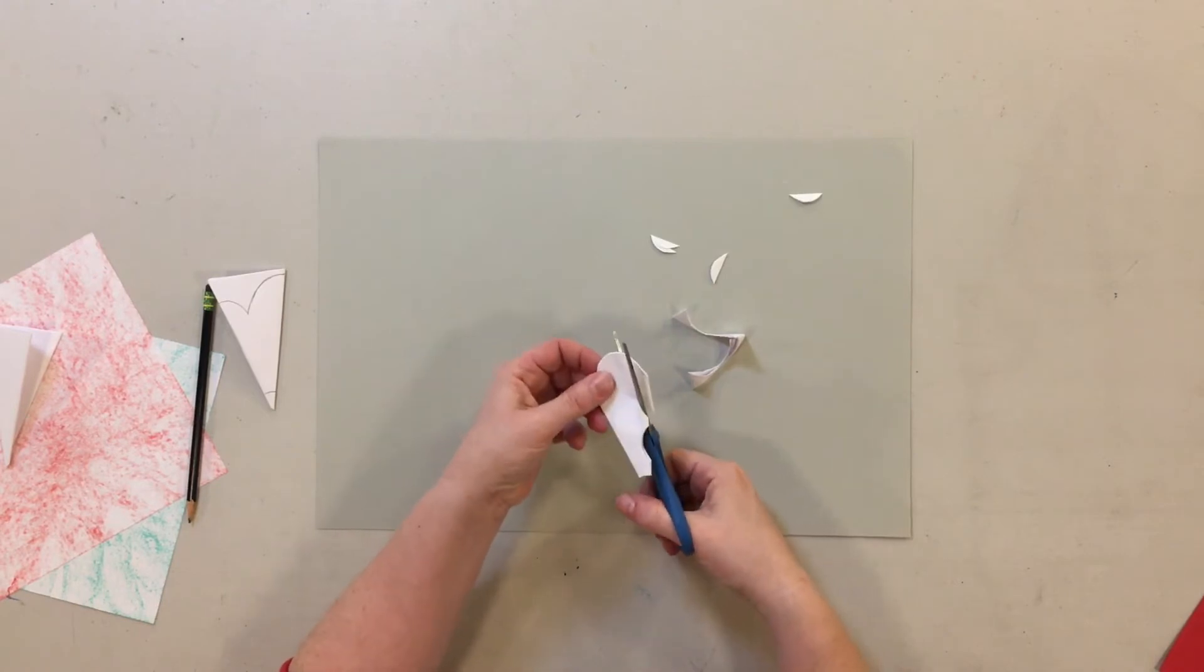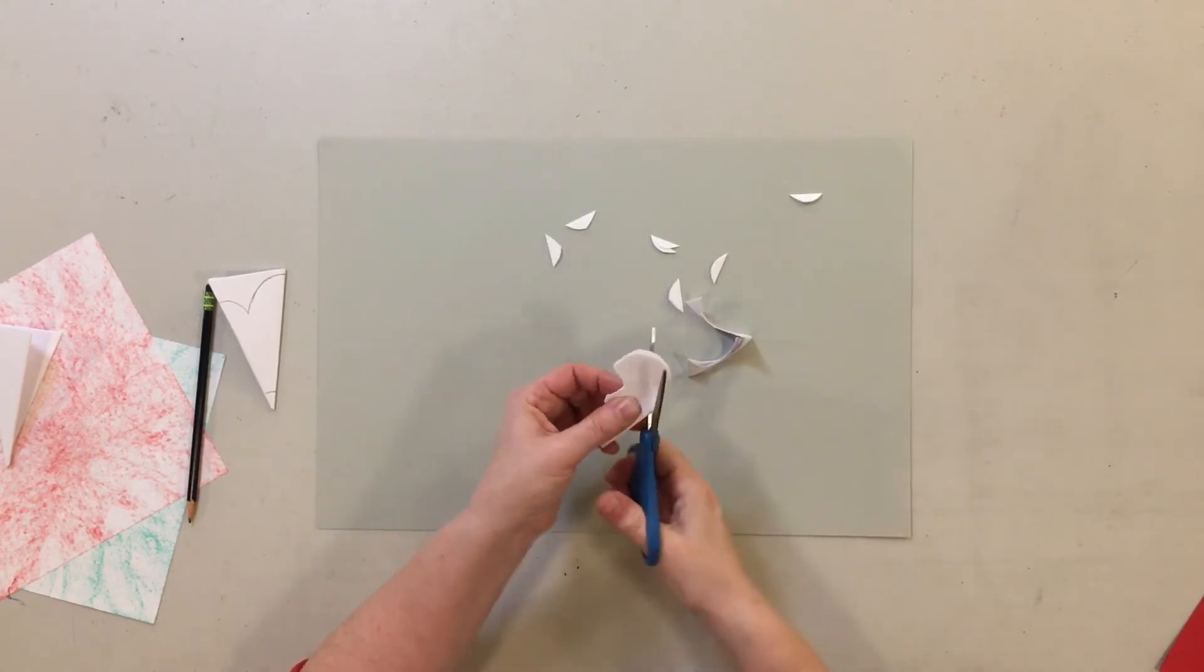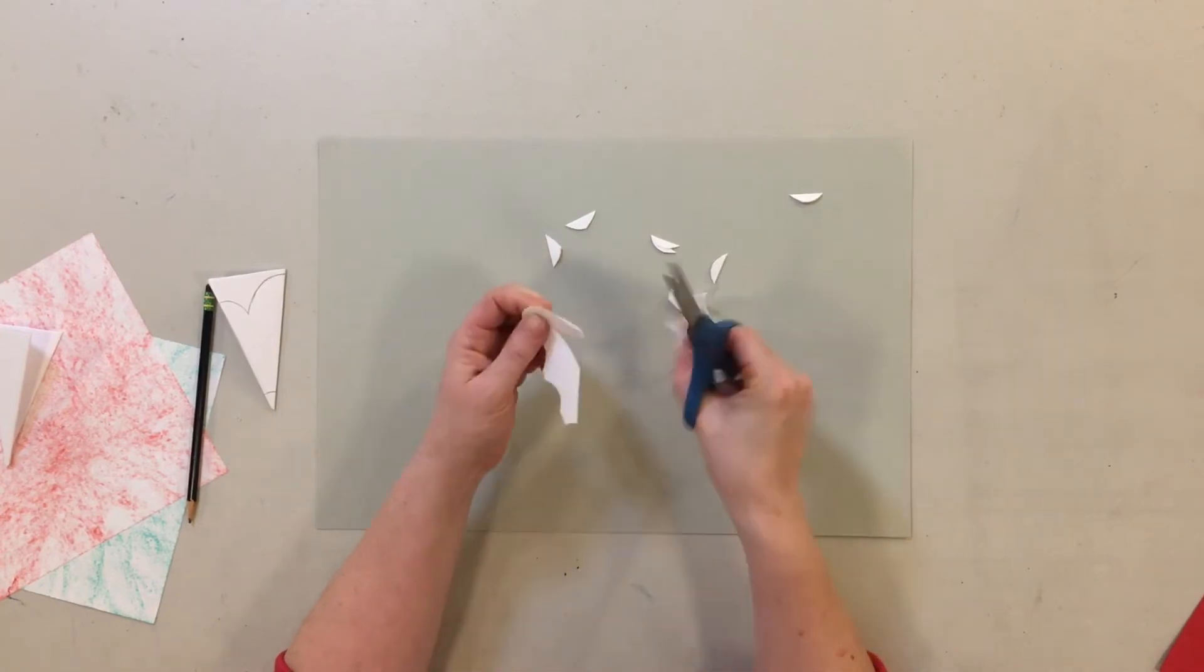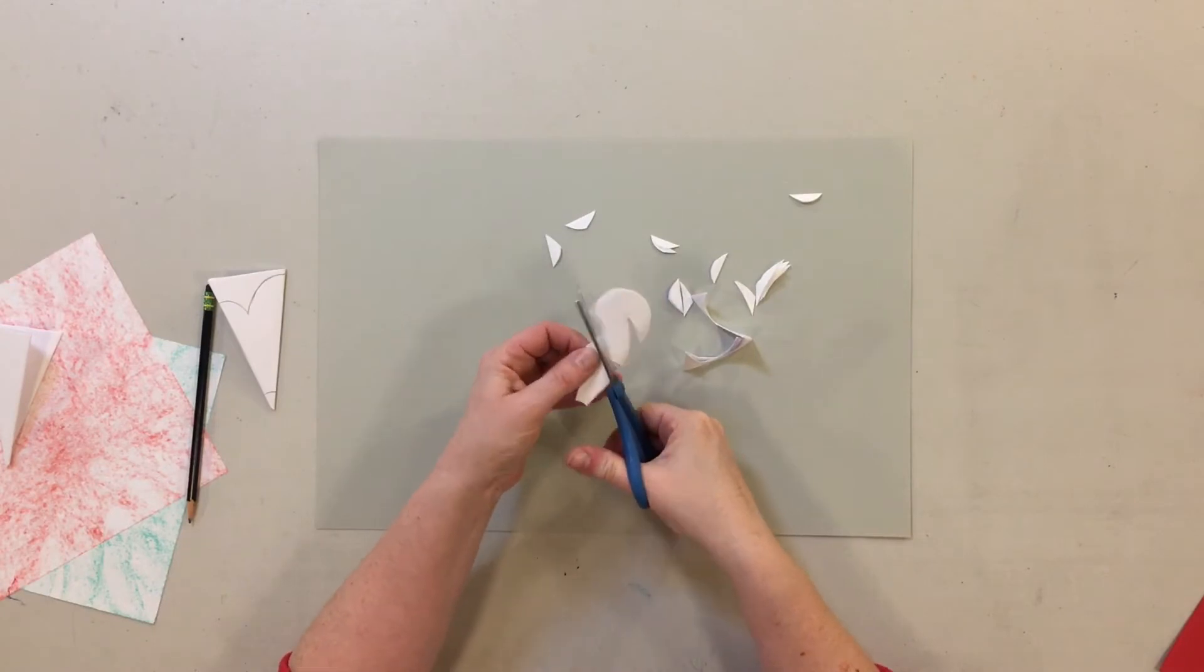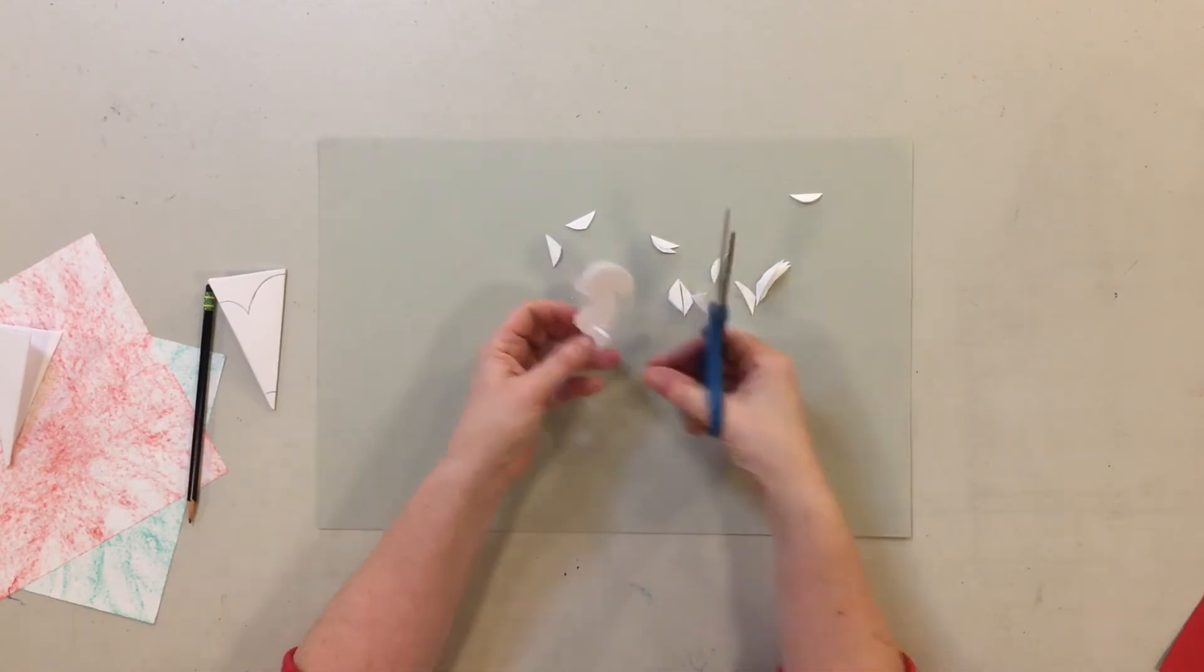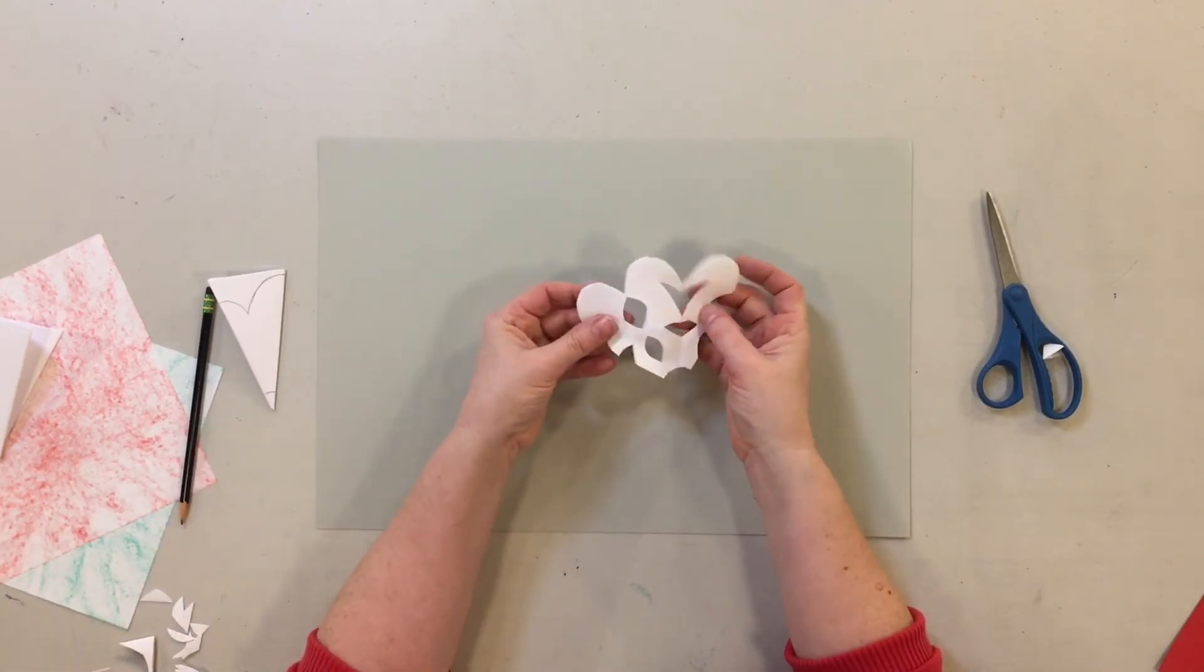And then on the sides, I'm just cutting some random shapes. If you hold your scissors open wider, it'll give you better leverage for cutting through all the folds of the paper. And then open it up and see your flower.